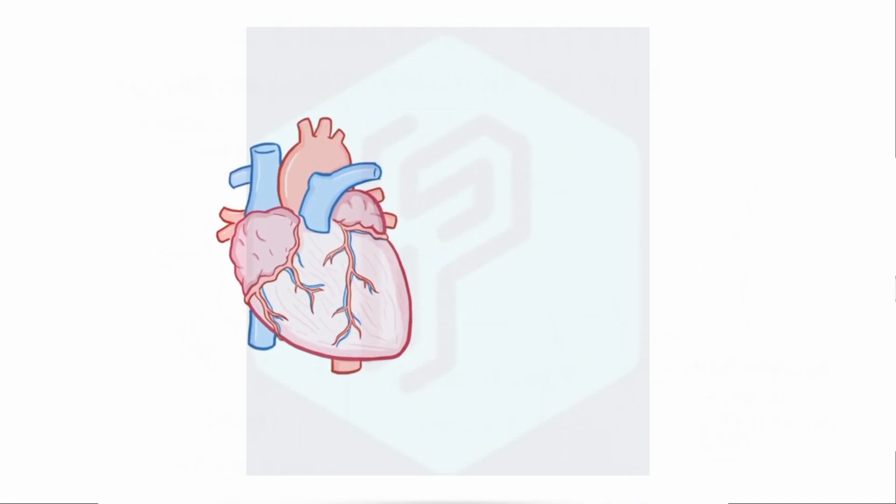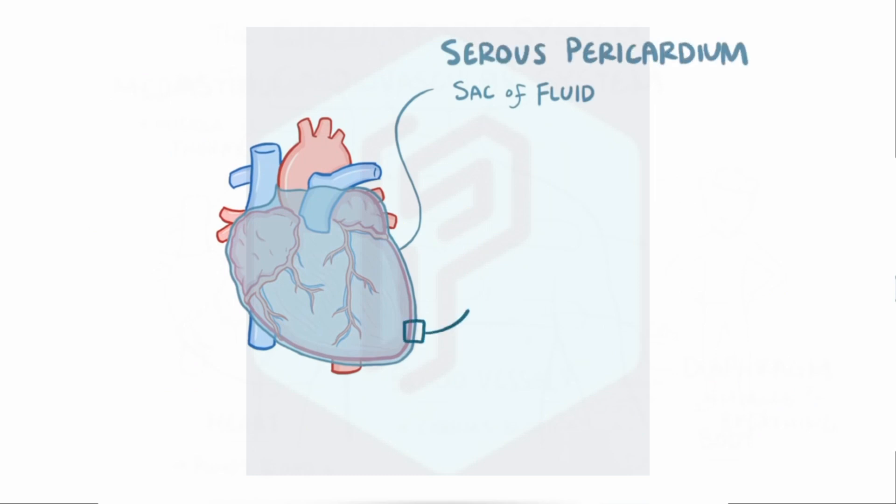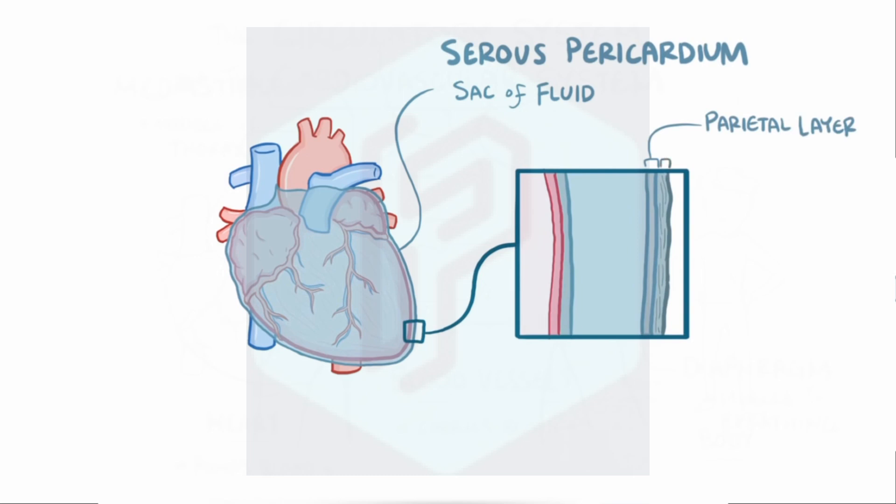Now, if you look a little more closely, you can see that the heart sits inside a sac of fluid that has two walls called the serous pericardium. The outer layer is called the parietal layer, and it gets stuck tightly to another layer called the fibrous pericardium, which is made of tough, dense connective tissue which holds the heart in place and prevents it from overfilling with blood.